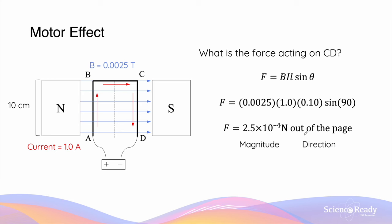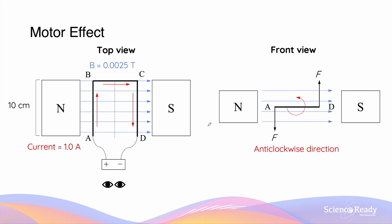In this case, the force acting on side CD of this wire will be out of the page. And this is where we begin discussing the concept of how a DC motor operates. The force acting on side AB is into the page.